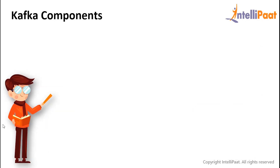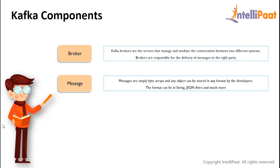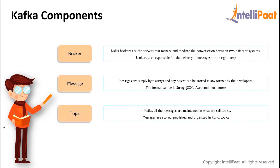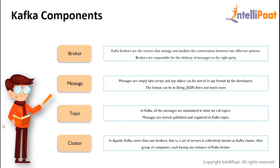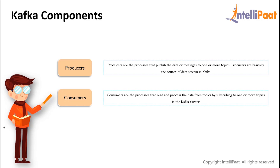Now let's understand the various components of Kafka. We have brokers, which are basically the servers that manage and mediate the conversation between two different systems. Brokers are responsible for the delivery of messages to the right party. Then we have messages, which could be of any format such as string, JSON, Avro and so on. After that we have topics — in Kafka all the messages are maintained in what we call topics. These messages are stored, published and organized in Kafka topics. And then we have clusters — in Apache Kafka, more than one broker, that is a set of servers, is collectively known as a Kafka cluster. Producers are the processes that publish the data or messages to one or more topics — these are basically the source of data stream in Kafka. Consumers are the processes that read and process the data from topics by subscribing to one or more topics in the Kafka cluster.